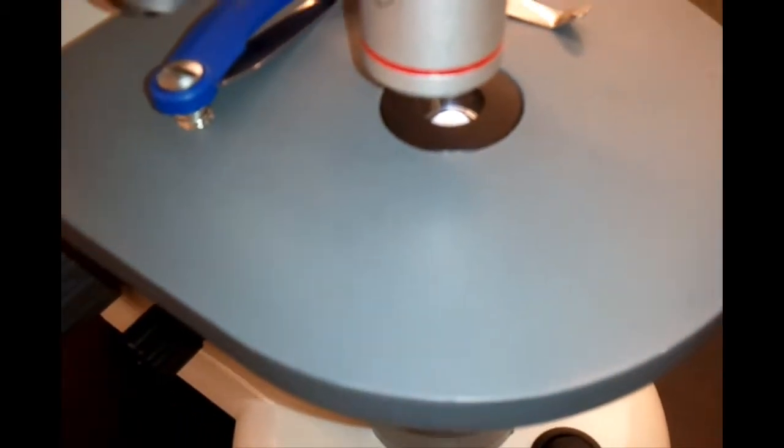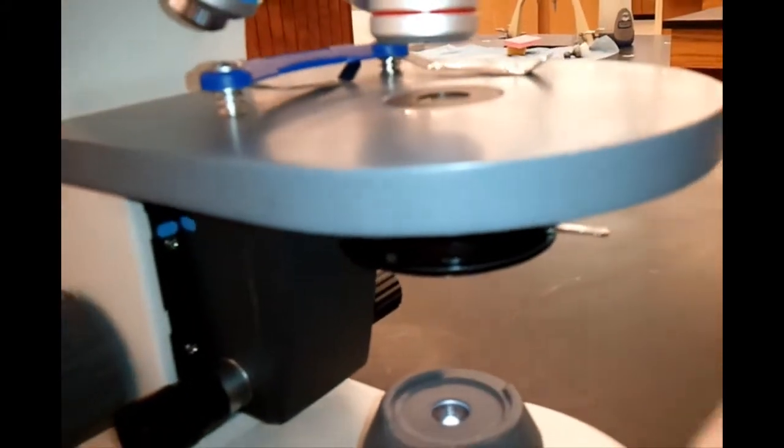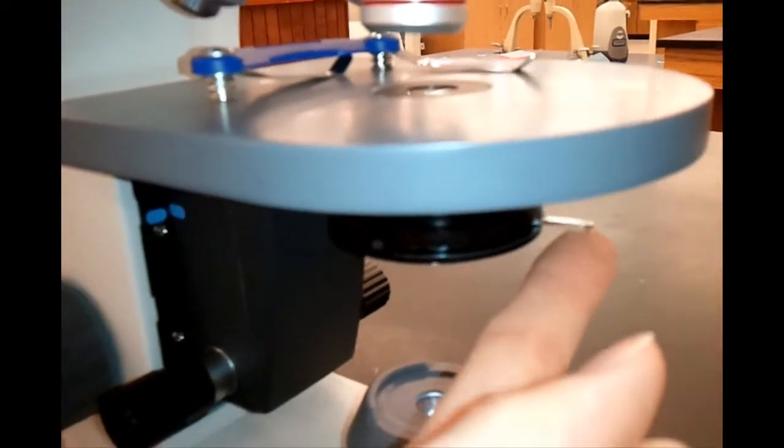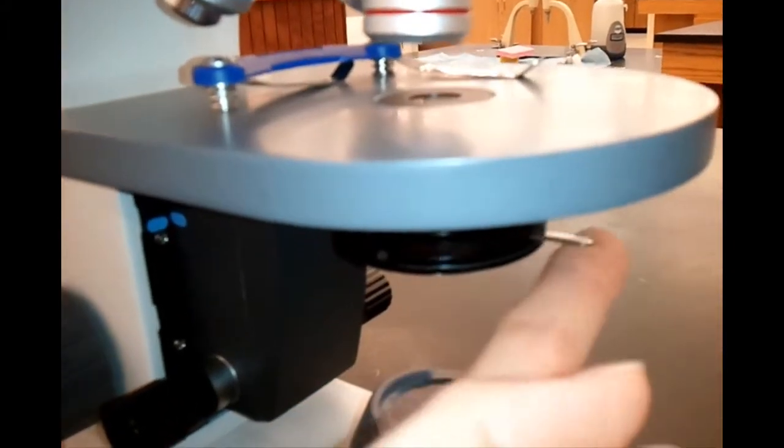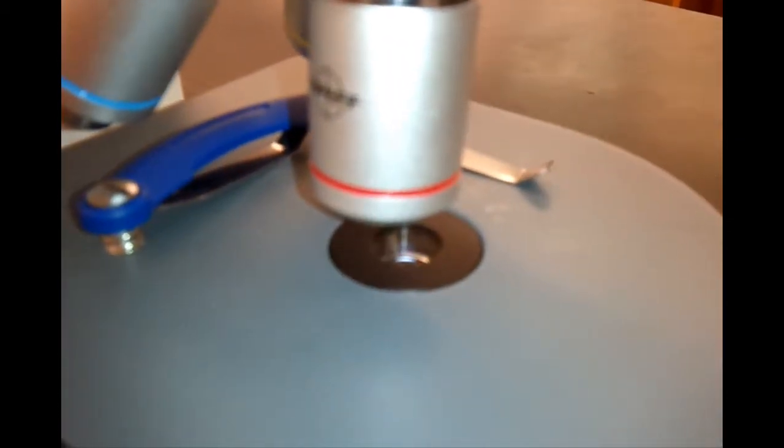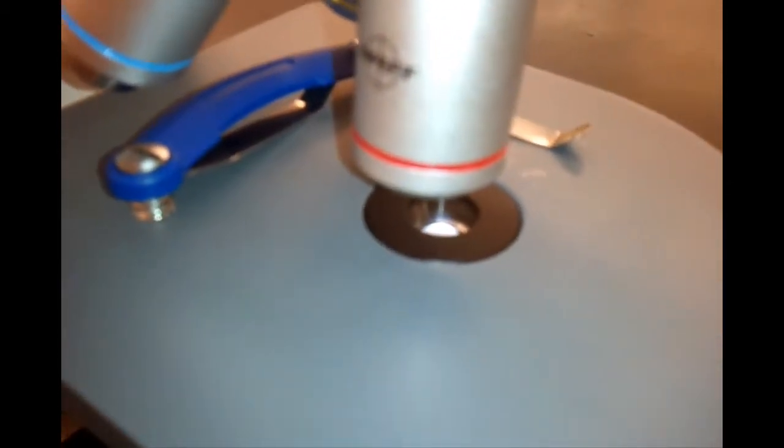The light travels through an opening in the stage. The amount of light is controlled by a small lever underneath the stage called a diaphragm. This microscope has an iris-type diaphragm that functions like the iris of your eye.